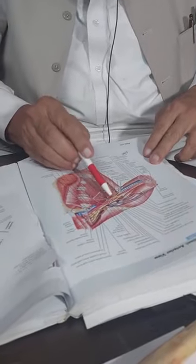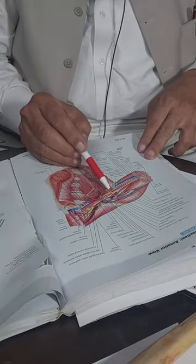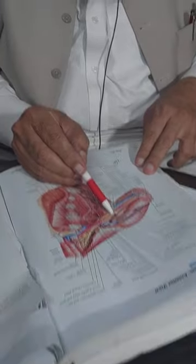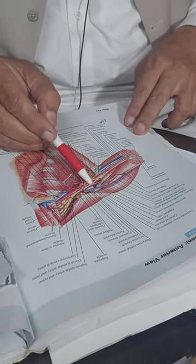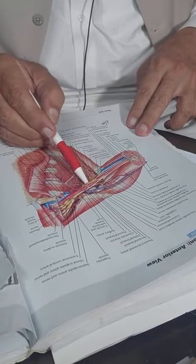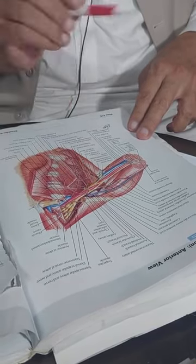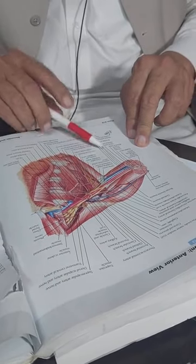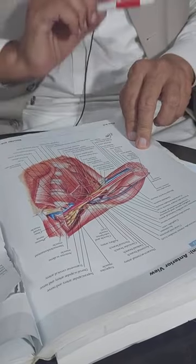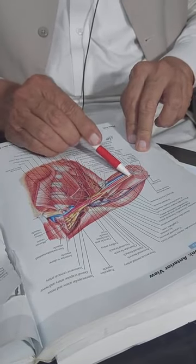And then medial to the coracobrachialis, you can see this is the median nerve, which is formed by the lateral root from the lateral cord and the medial root from the medial cord, which clasps the axillary artery. The median nerve lies lateral to the axillary artery and then lateral to the brachial artery.